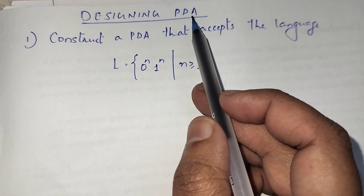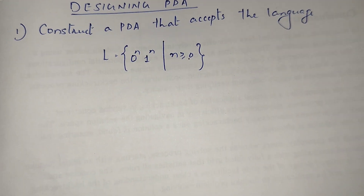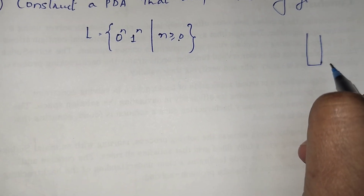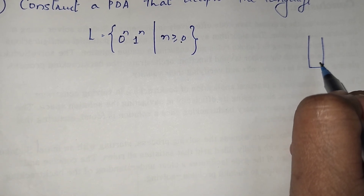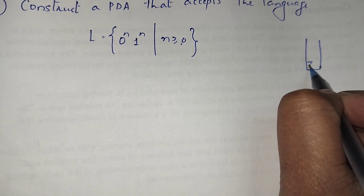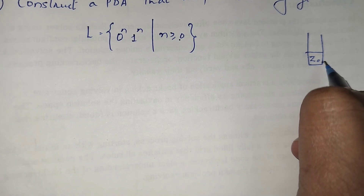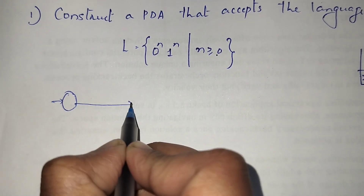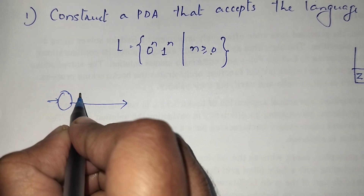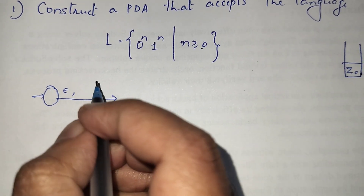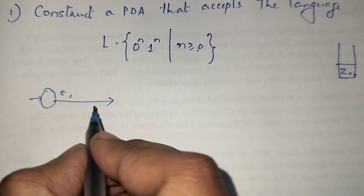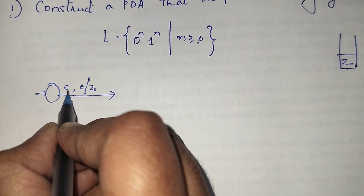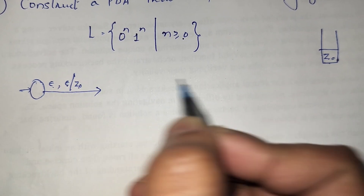So we are using a pushdown automata, which is nothing but a finite automata along with a stack. In order to know we've reached the bottom of the stack, initially we are pushing Z0 to the stack. That is the first step when designing a pushdown automata. There will be a start state, and without seeing any input symbol, we are just pushing Z0 to the stack — not popping anything, just pushing Z0.